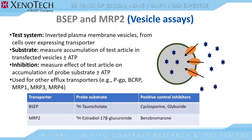The last type of assay are the vesicle assays. These are generally used when evaluating BSEP and MRP2, and sometimes PGP transporter substrate or inhibition. In vesicle assays, the test system consists of an inverted plasma membrane of vesicles made from cells that are overexpressing the transporter of interest. For substrate assays, we're measuring the accumulation of test article inside the transfected vesicles. Since vesicles are not whole-cell systems, they require the addition of the cofactor ATP, so treatments are included with and without the ATP cofactor. For vesicle inhibition assays, we measure the effects of the test article on the accumulation of a known probe substrate in the presence and absence of ATP.